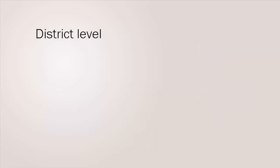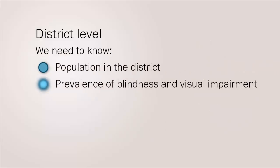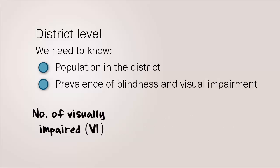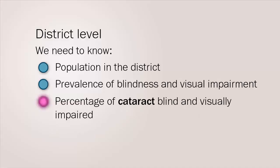To start gathering this information, we need to know the population in the district and the prevalence of blindness and visual impairment. Then we can calculate the number of blind people. This is equal to the prevalence of blindness multiplied by the population. It is also important to calculate the percentage of cataract blind or visually impaired locally, as cataract is a leading cause of blindness.